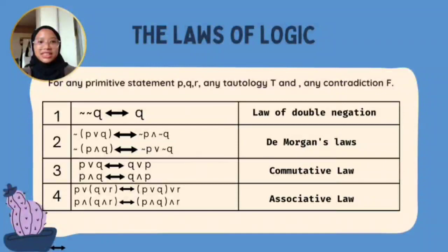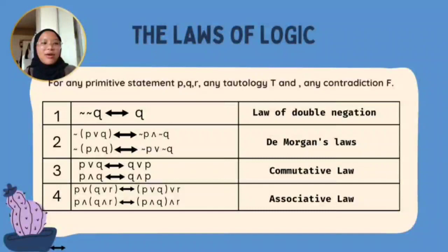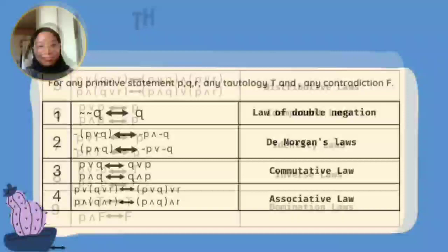The fourth law is the Associative Law, which allows us to switch bracket placement. So from P and Q and R, written as P and bracket Q and R, we can switch it to bracket P and Q and R.